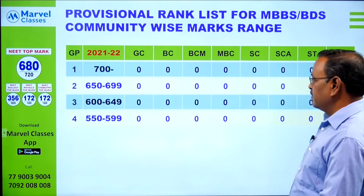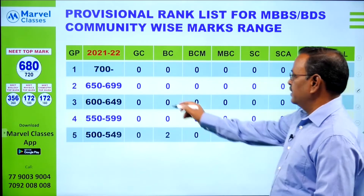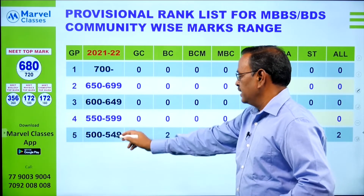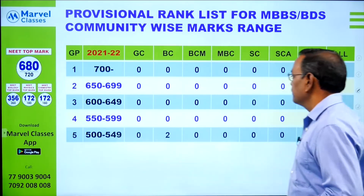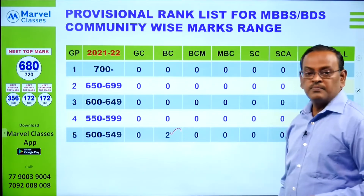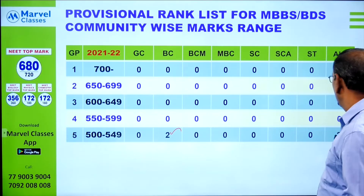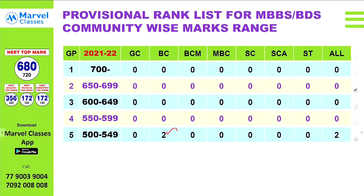No one has a rank at 700. In the 650 to 699 range, there are BC students — in total, 2 students. In the 450 to 499 range, there are 11 students across BC, MBC, and SA categories.